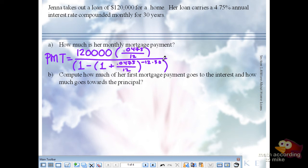So once you do enough of these, you'll start to realize that your answer is reasonable. This is not a very high amount for the loan. This is not a very high interest rate. So if Jenna's paying $3,000 a month, that's not right. Something's not right there.